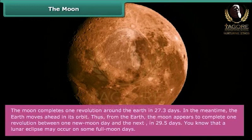In the meantime, the Earth moves ahead in its orbit. Thus, from the Earth, the Moon appears to complete one revolution between one Moon day and the next in 29.5 days. You know that a lunar eclipse may occur on some full Moon days.